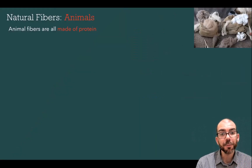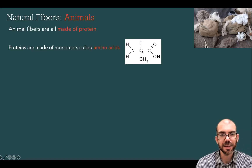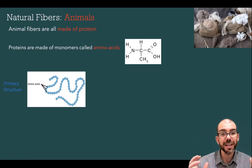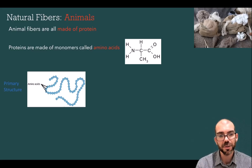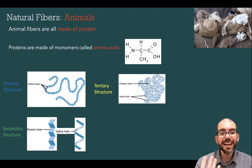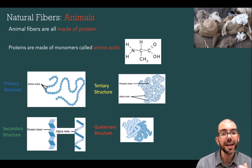Animal fibers are always made out of protein. Proteins are made out of monomers called amino acids. An amino acid has an amine group on one side, a carboxyl group on the other that makes it acidic, and a central carbon. What's unique about proteins is these amino acid monomers can combine into a variety of complex structures: first a long polypeptide chain (primary structure), then folded into a sheet or helix (secondary structure), then into a tertiary structure with a unique 3D shape, and multiple tertiary structures can combine into a quaternary structure.